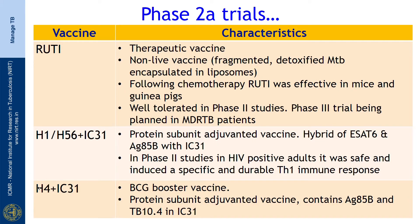Under Phase 2a we have 5 vaccines. RUTI is a therapeutic vaccine; it is a non-live vaccine using fragmented, detoxified MTB encapsulated in liposomes. Following chemotherapy, RUTI was effective in mice and guinea pigs, is well tolerated in Phase 2 studies, and Phase 3 trials are being planned in MDR-TB patients.